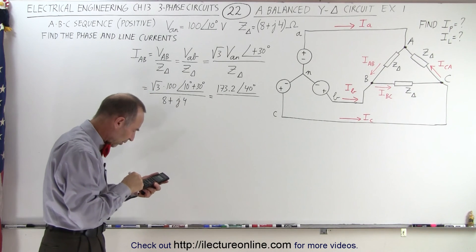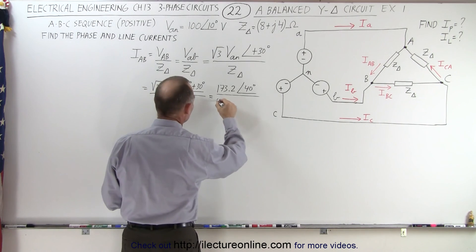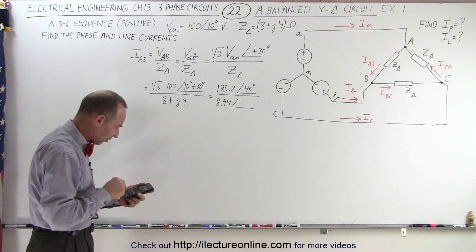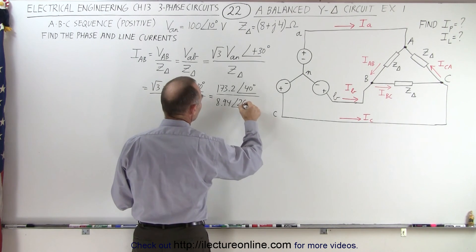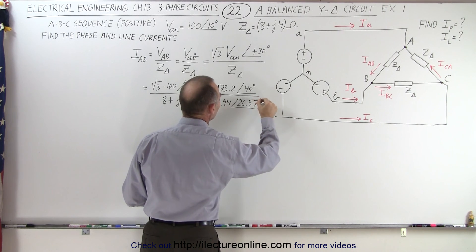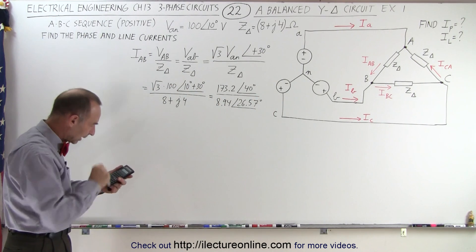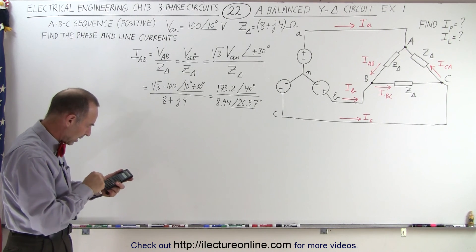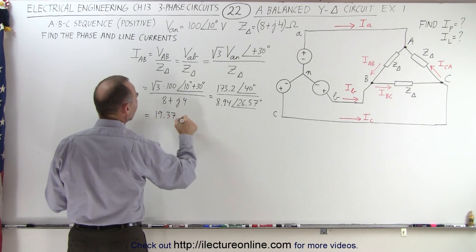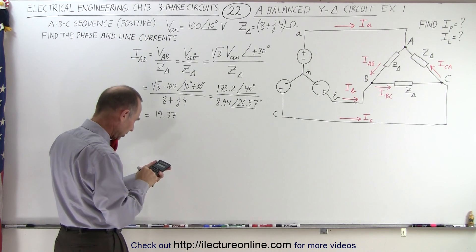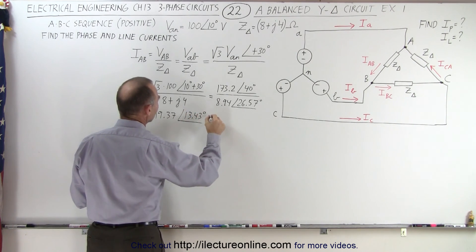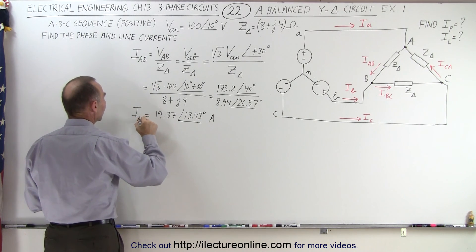We divide by a magnitude of the square root of 8 squared plus 4 squared, which is 8.94, with a phase angle of the inverse tangent of 4 over 8, which is 26.565 degrees — call it 26.57 degrees. Calculating: 173.2 divided by 8.94 gives us 19.37, with a phase angle of 40 minus 26.57, which is 13.43 degrees. That is the first phase current IAB: 19.37 amps at 13.43 degrees.